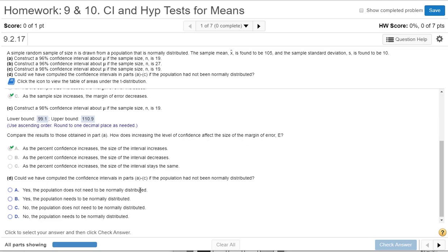Could we have computed the confidence interval in parts A through C if the population had not been normally distributed? So we weren't given the actual raw data here. So ordinarily, if we have these small sample sizes, small below 30, we would go ahead and plot those to see if they were roughly symmetric, roughly unimodal, didn't have a bunch of peaks and things like that, wasn't heavily skewed.